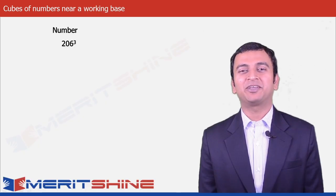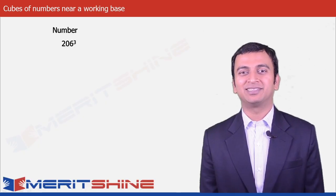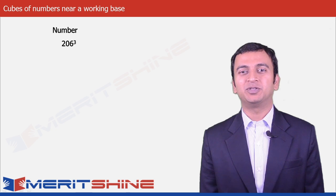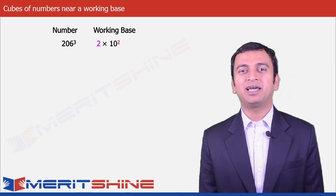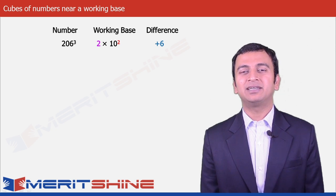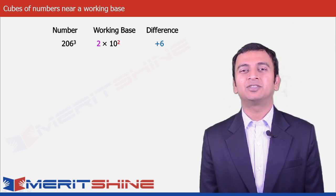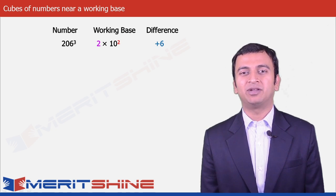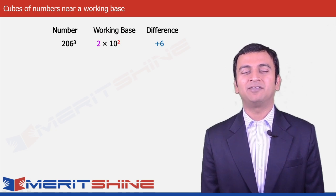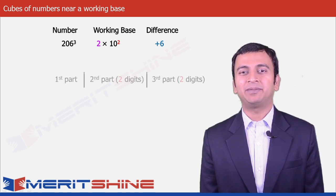Let us try to find the cube of 206. Here our working base would be 2 × 100. The multiplier 2 would be called a, and our difference here is plus 6, which we will denote by x. So we can now proceed to write down our answer, which would be in 3 parts.